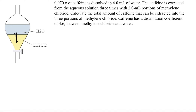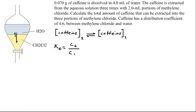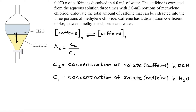Now that we know caffeine reaches an equilibrium, we can write the reaction equation as follows: the concentration of caffeine in solvent 1 is in equilibrium with the concentration of caffeine in solvent 2. We can write the partition coefficient, or distribution coefficient, symbolized as K_D. We set that equal to the concentration of the solute — in this case caffeine — in dichloromethane, divided by the concentration of caffeine in water. This is very similar to setting up equilibrium constants when solving for Ka or Kb when dealing with acids and bases. We've been given that the distribution coefficient is 4.6 between methylene chloride and water.